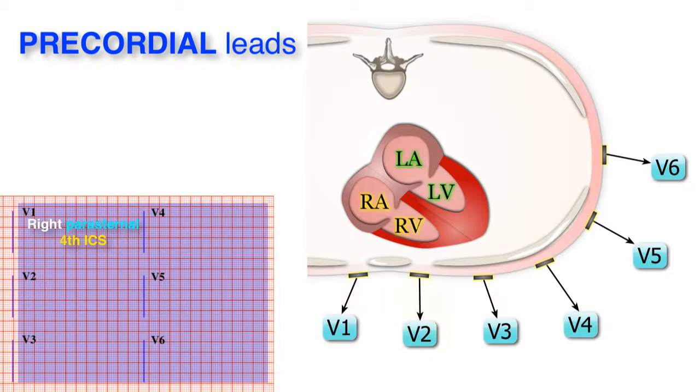V3 is placed between V2 and V4. V4 is placed at the 5th intercostal space on the midclavicular line. V5 is placed adjacent to V4 along the anterior axillary line. And V6 is placed more laterally along the mid-axillary line.